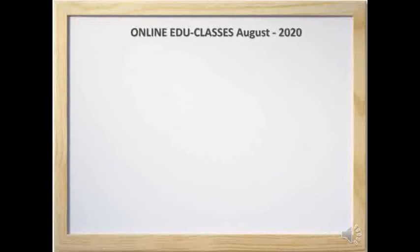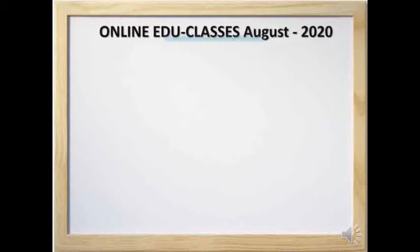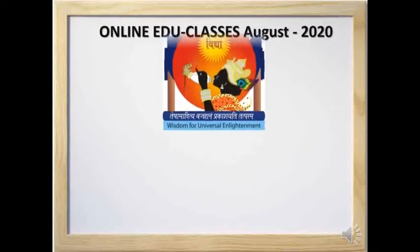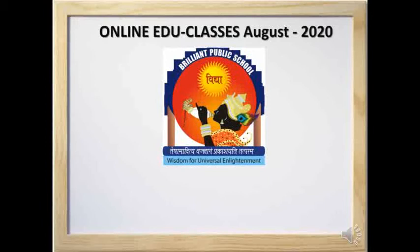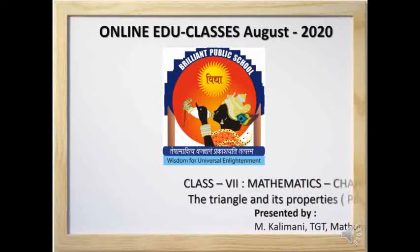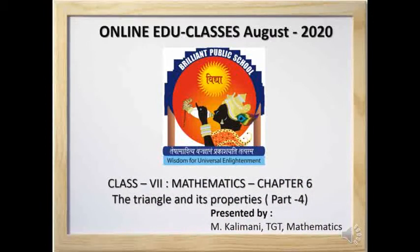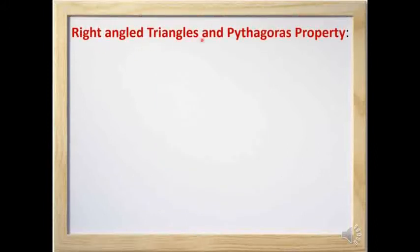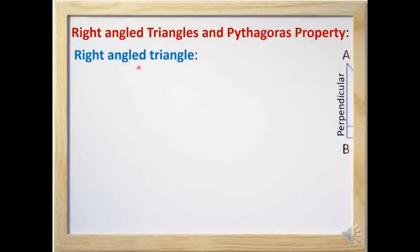Hello children, how are you all today? We are going to start the fourth part of Chapter 6, 'The Triangle and its Properties.' Today we are going to study one more property of a triangle — that is the Pythagoras property.